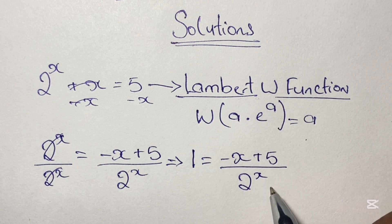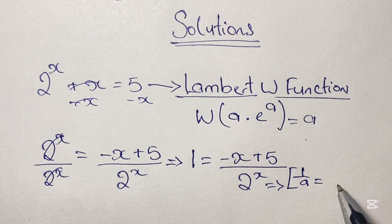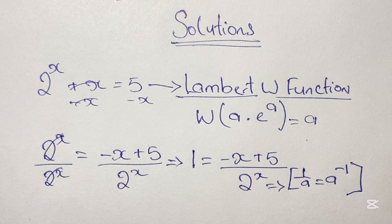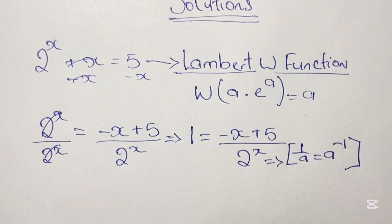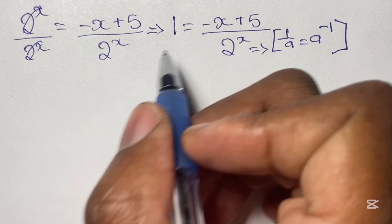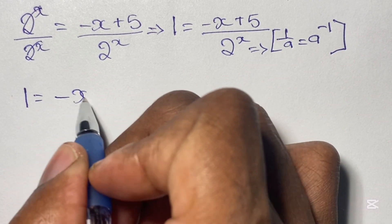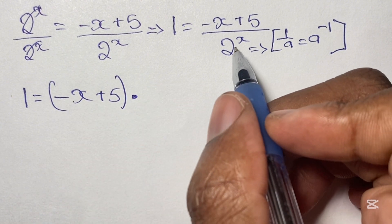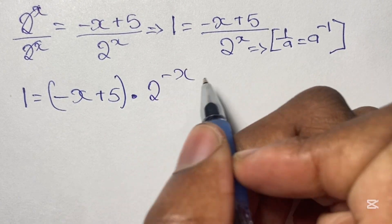Now this 1 over 2 to the power of x, applying our laws of indices where 1 over a is the same as a to the power of negative 1, we can write 2 to the power of x as 2 to the power of negative x. So 1 is equal to negative x plus 5, in brackets, times 2 to the power of negative x.